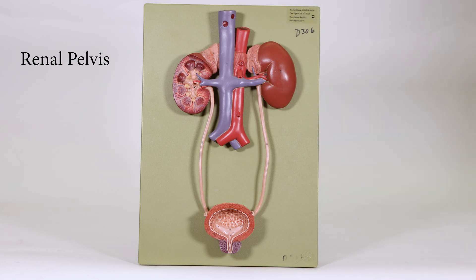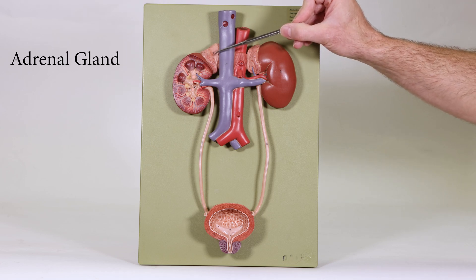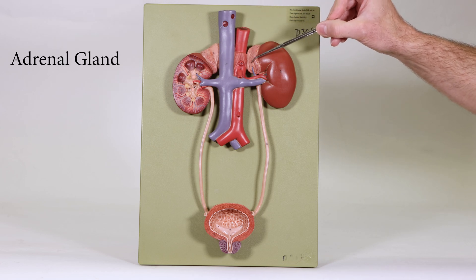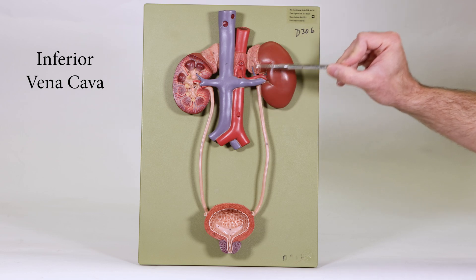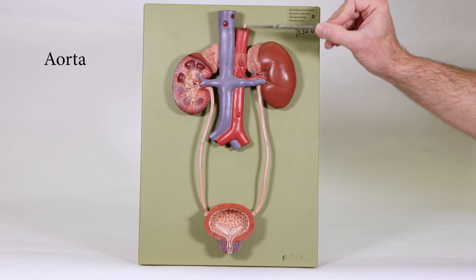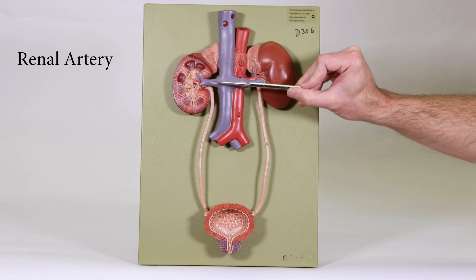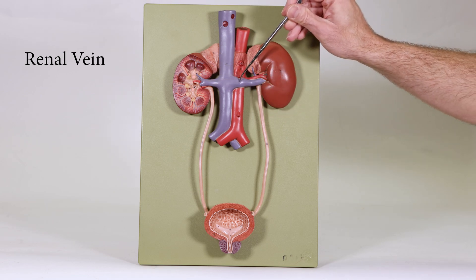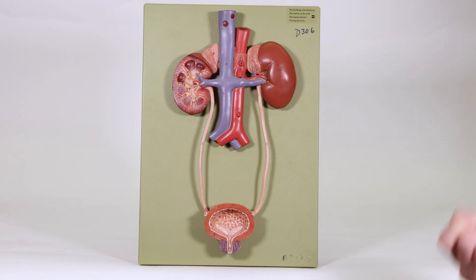So looking at a bit of the urinary system here. We also add in a little bit from the adrenals — the adrenal glands. You have the inferior vena cava here with the aorta here. And then we have the renal artery, which is behind this, and the renal vein in front. And that's looking at this model.